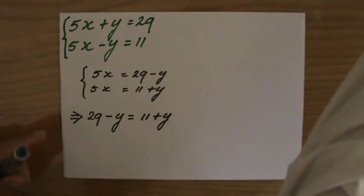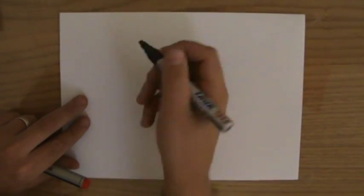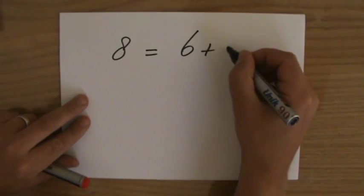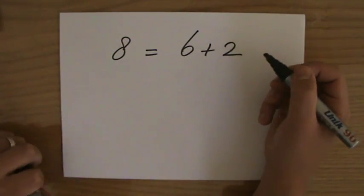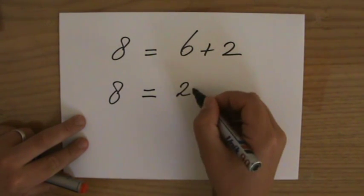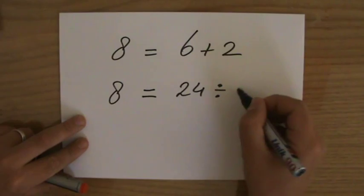Now I've given you an example of that before. I'm going to do it again because I love examples. For instance, what can we say? Well, 8 is 6 plus 2. Yeah, that's one equation. And 8 is also 24 divided by 3.